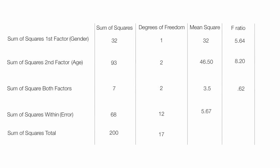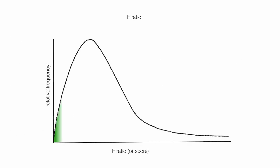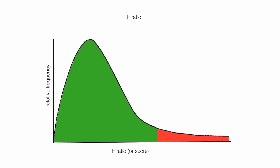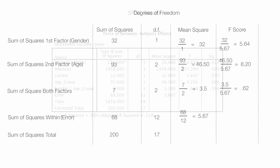Now I'm going to show you how to calculate the mean square and the F-ratio, and how we interpret those results. If the F-ratio falls within the red area — the rejection region — we reject the null hypothesis. If it falls into the green area, we fail to reject the null hypothesis. I'll also show you the SPSS output and how to interpret that.